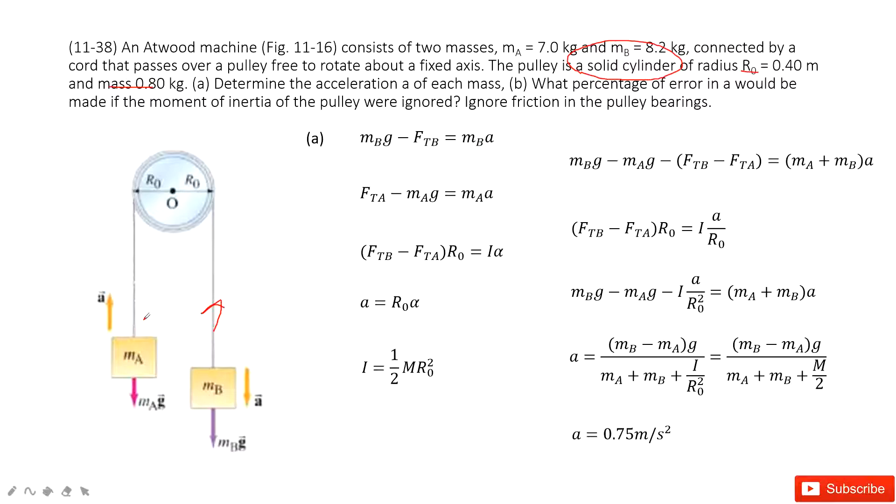Similarly, we look at A. For A, we can see the acceleration is up, so the tension FtA minus the gravity is equal to mass A times a.